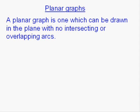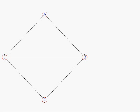This video is about an important part of graph theory which talks about planar graphs. A planar graph is one which can be drawn in the plane with no intersecting or overlapping arcs. This is an example of a planar graph because none of the arcs intersect or overlap each other. There are no crossing points with the arcs.